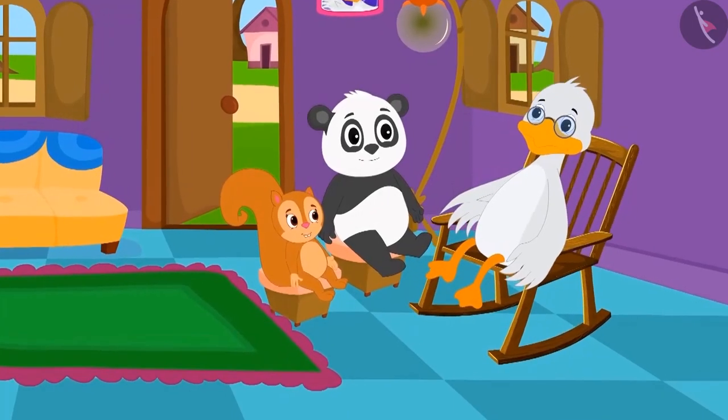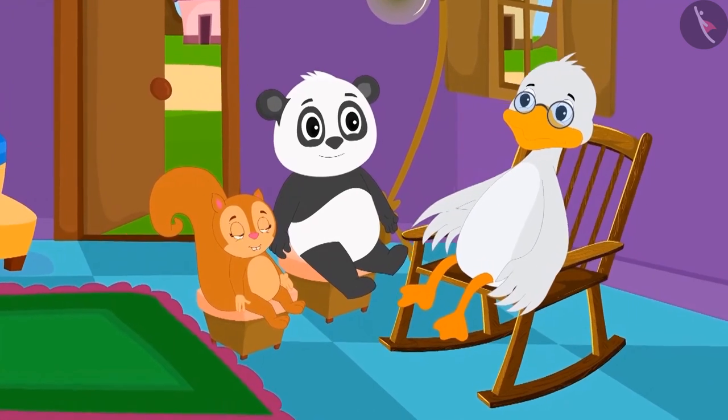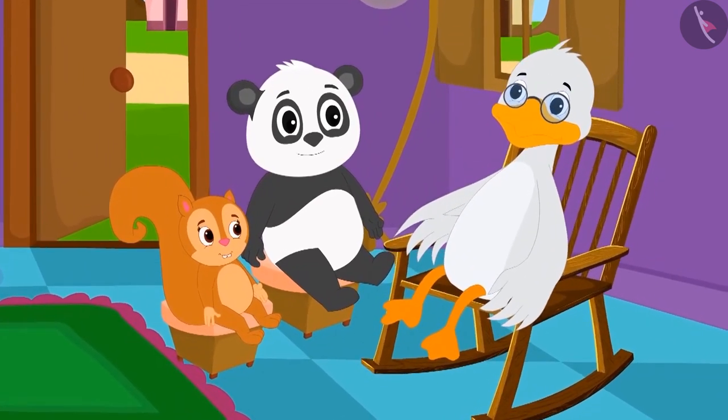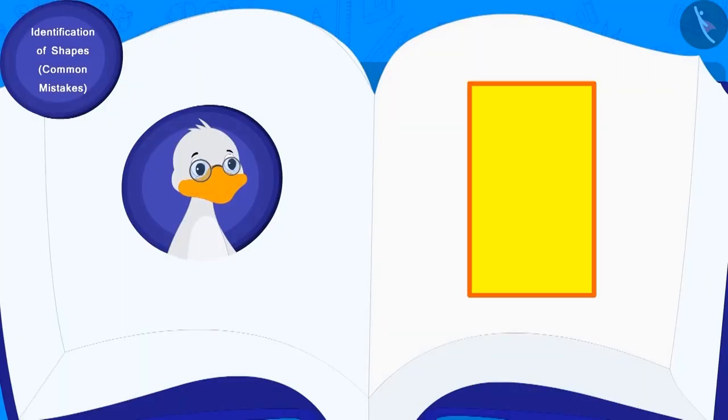Today, at Chacha's house, Chanda and Golu are playing a unique game. Chacha will show them a shape and they will have to tell the name of that shape. Chacha will give a toffee to the one who recognizes the shape correctly.